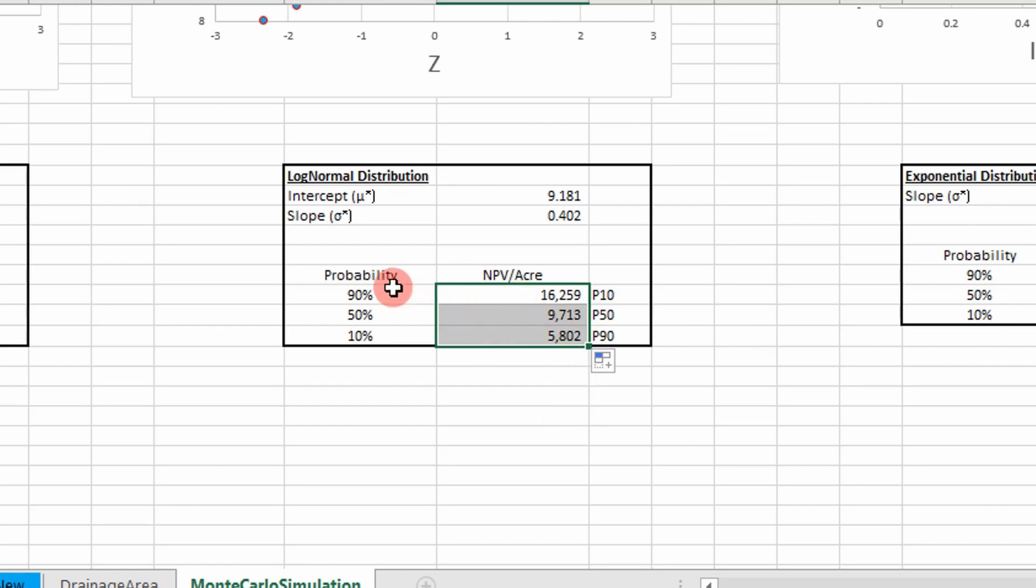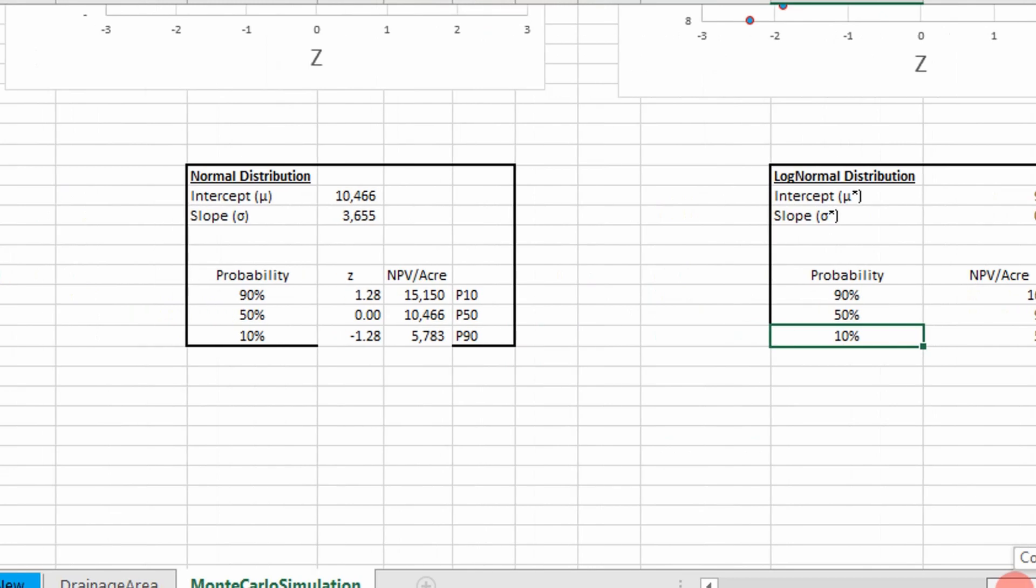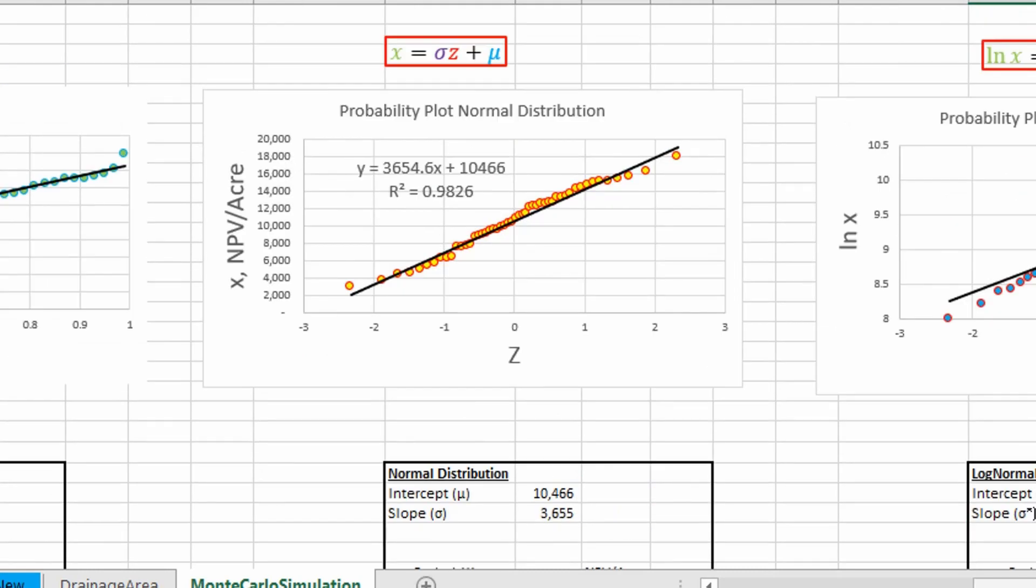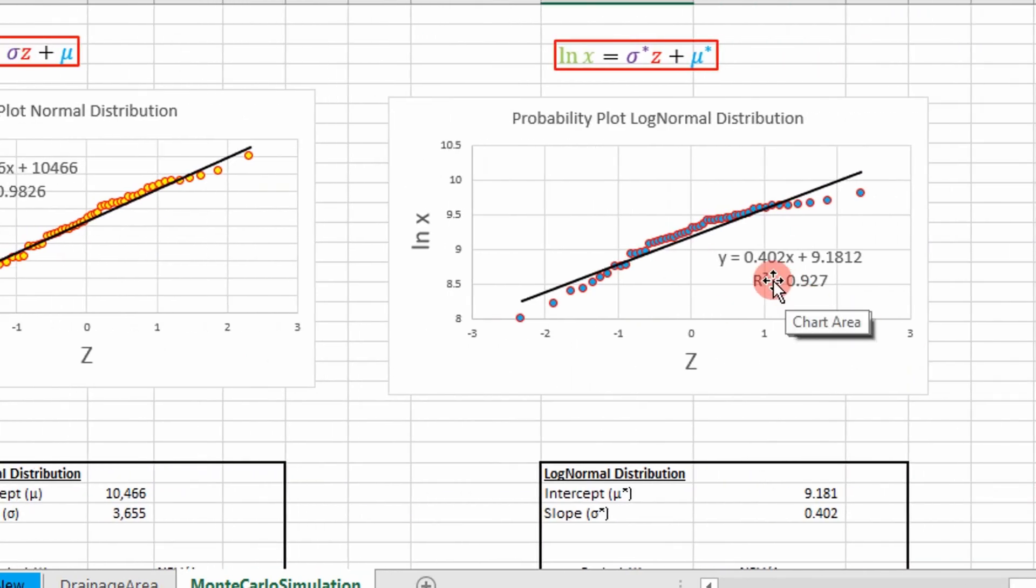And these are the values we get for P90, P50, P10. If you compare them to our earlier values, they're a little different. But this makes sense because our fit up here, quantified by this R squared value, is 0.927, which is not as good as our normal or uniform probability distribution plots.